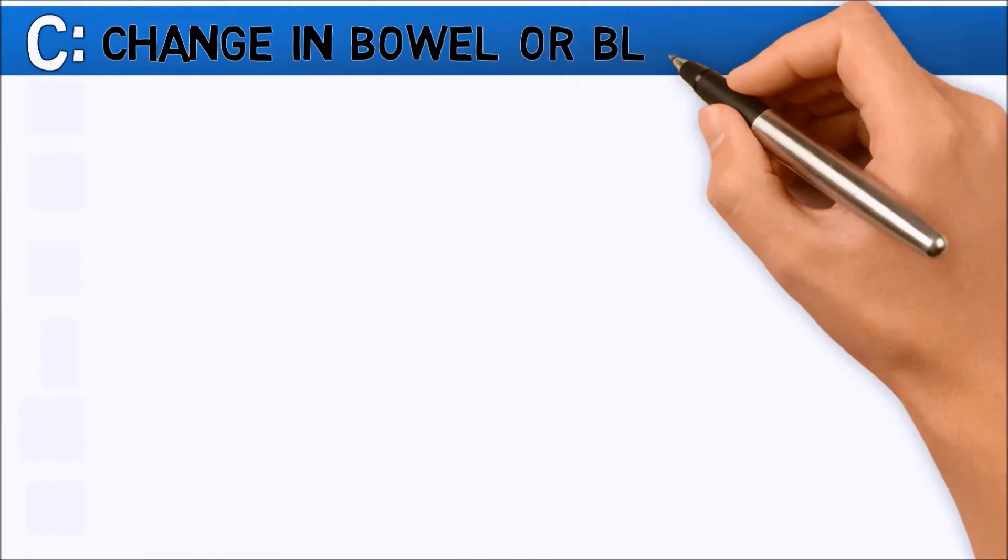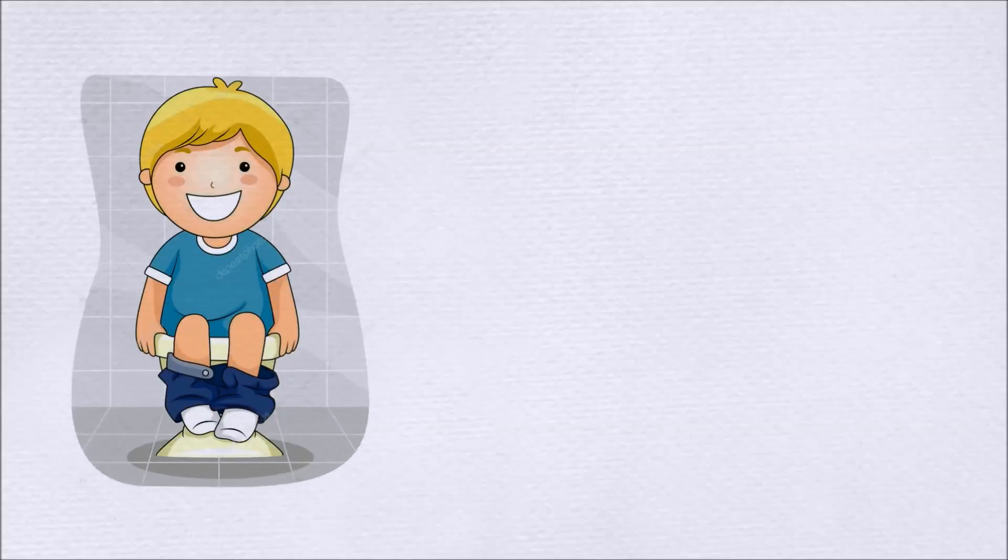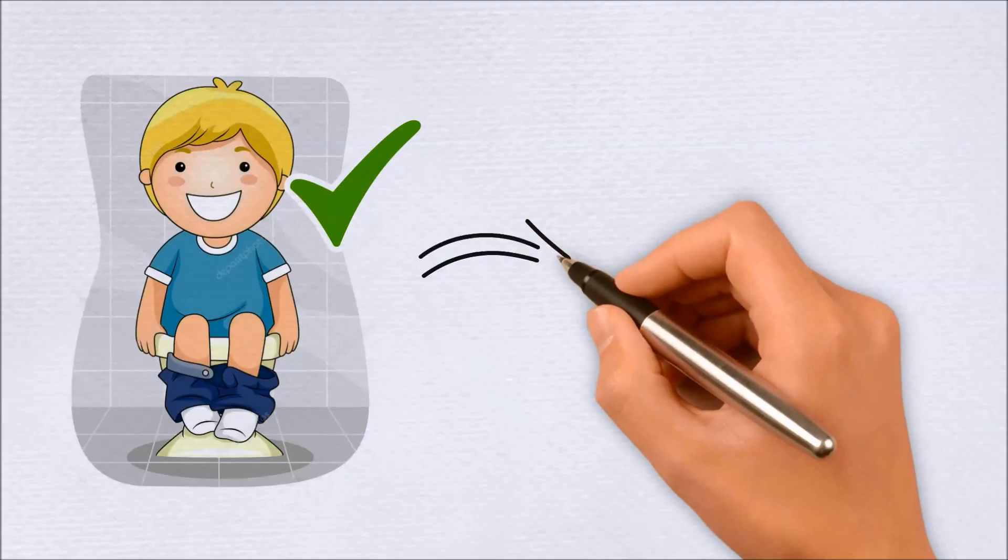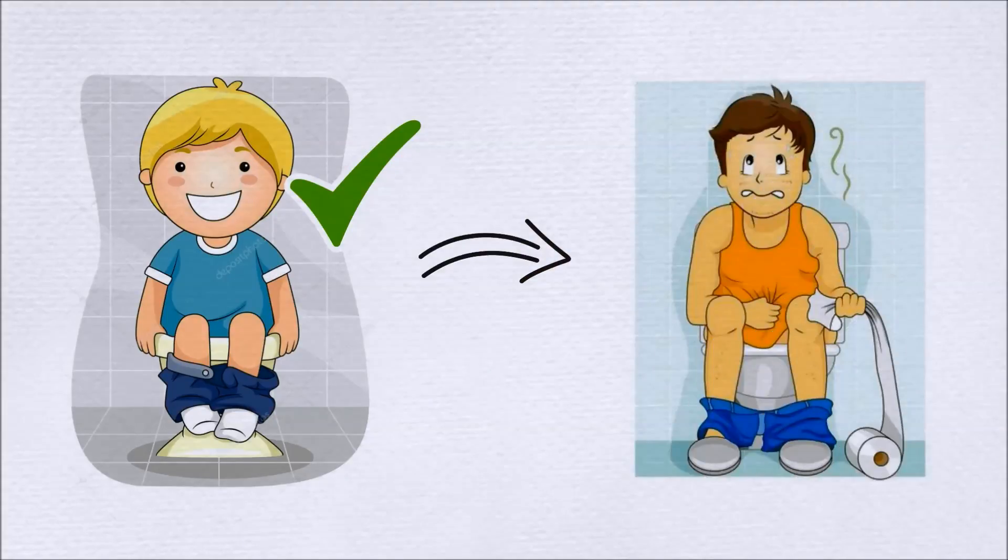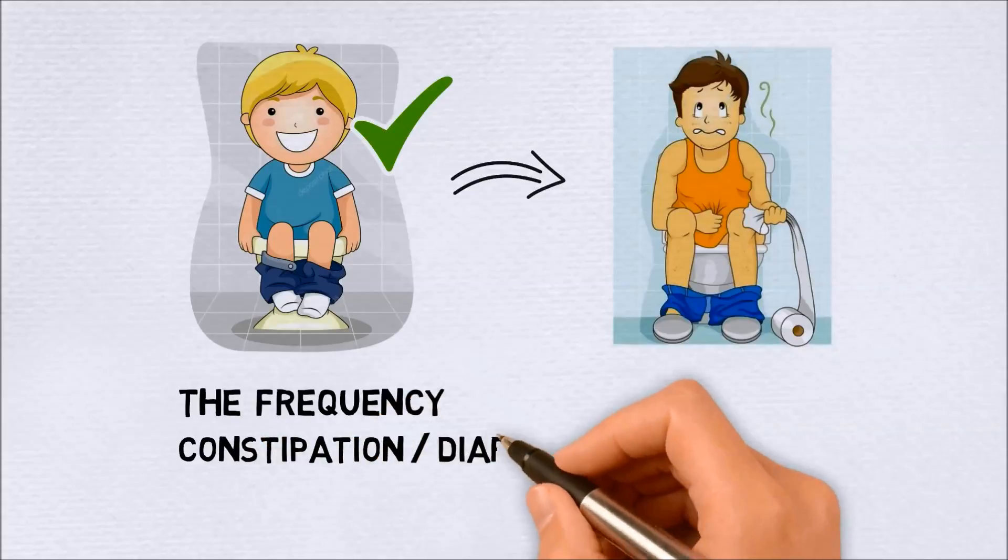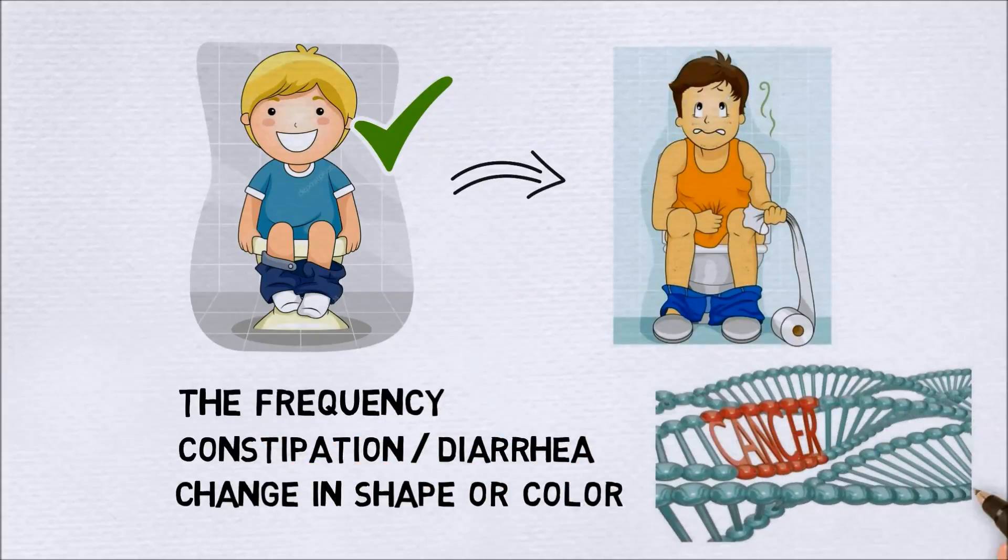Change in Bowel or Bladder Habits. If you have been experiencing healthy and regular bowel movements but have begun to experience a sudden or gradual shift in the routine, maybe in the frequency, constipation, diarrhea, change in shape or color, these could be the signs of cancer.